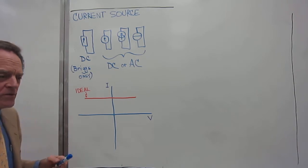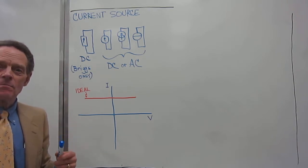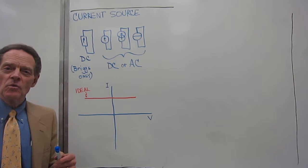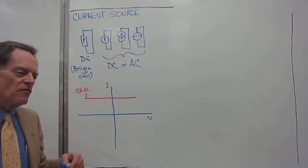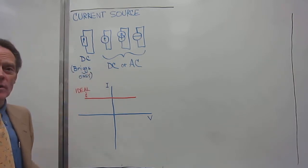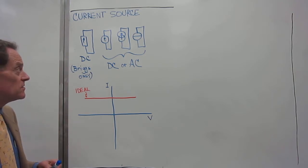Just like in the batteries or the voltage sources, we had to show the polarity, which side, which end of the voltage source was positive. Here we have to show which direction the current is actually traveling.